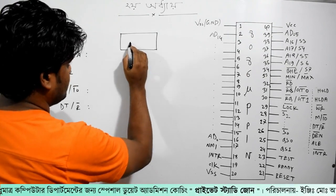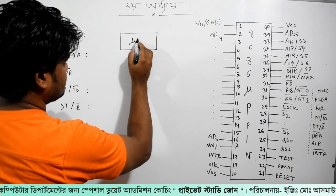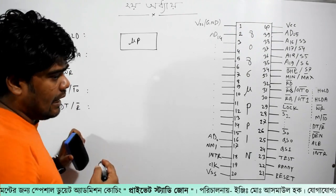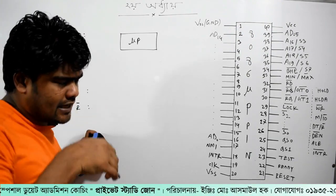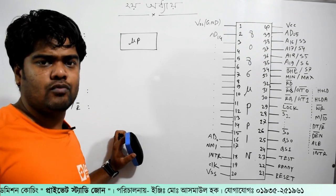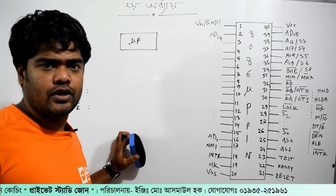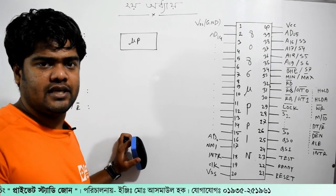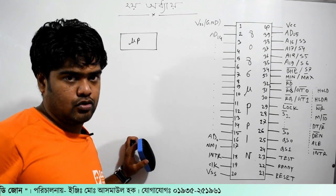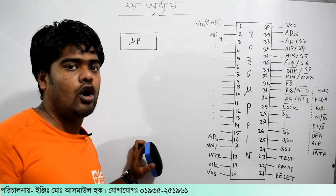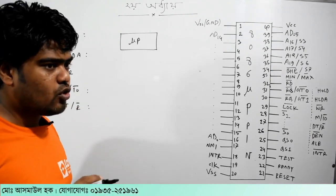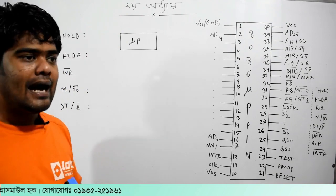This is the microprocessor. For example, the problem is that when we are retrieving data, the amount of data we need to get — so this is the amount of data we use. Now, what we have to do using I/O and IoT operations.